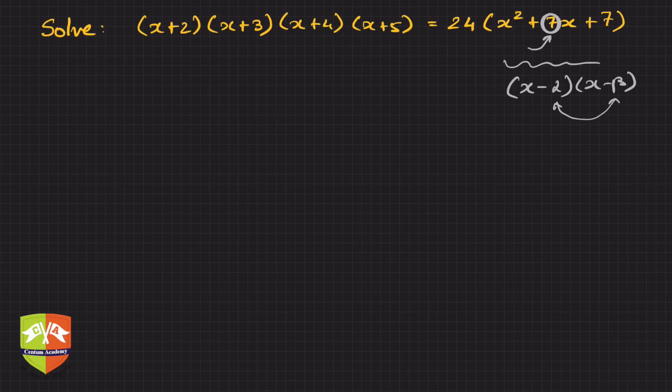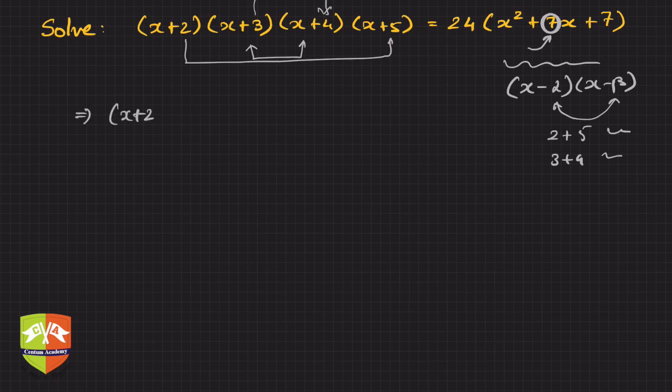Here 7 is alpha plus beta, so if you see, 7 can be broken down into 2 plus 5 or 3 plus 4. With this hint, I will be proceeding further. Hence I will be clubbing these two terms because 3 plus 4 ends up being 7, and 2 and 5 also is 7. Let's try and see what happens. If I write this as (x+2)(x+5)(x+3)(x+4), and in the right hand side it is 24(x²+7x+7).